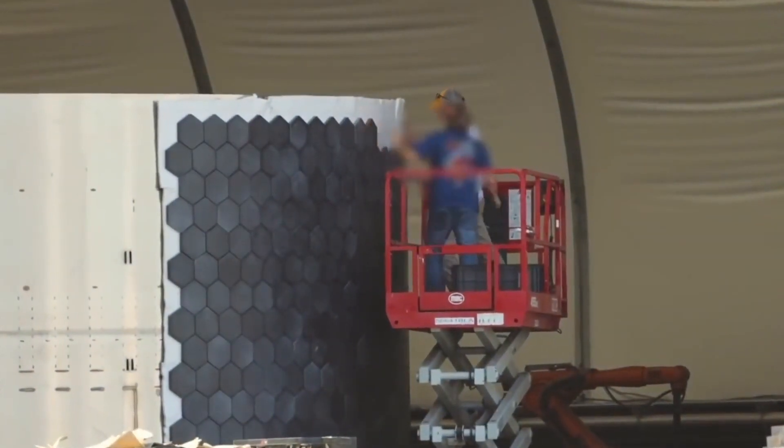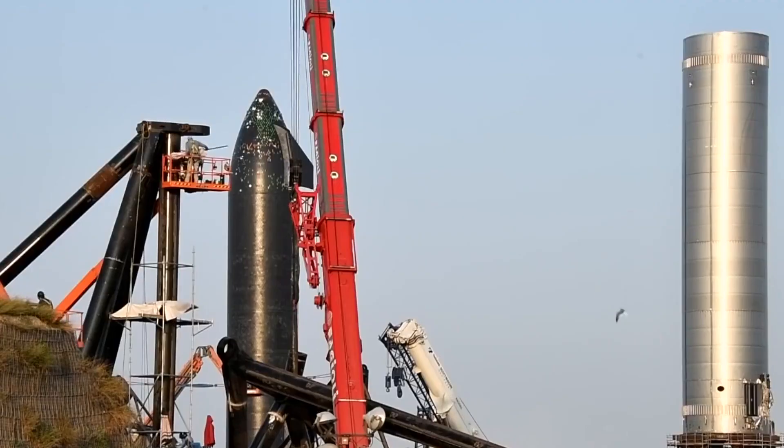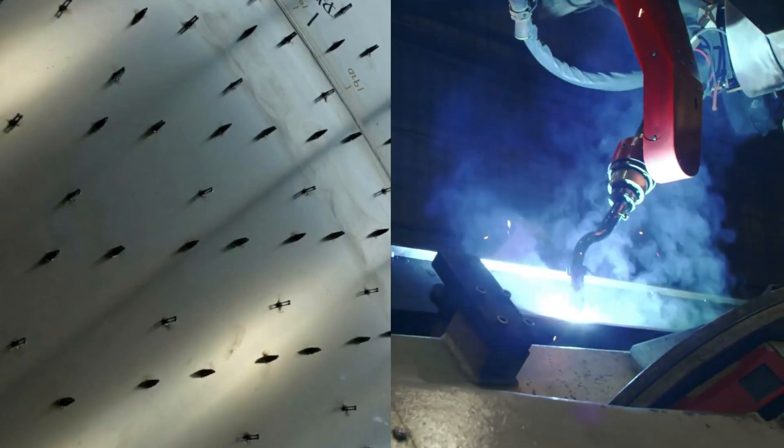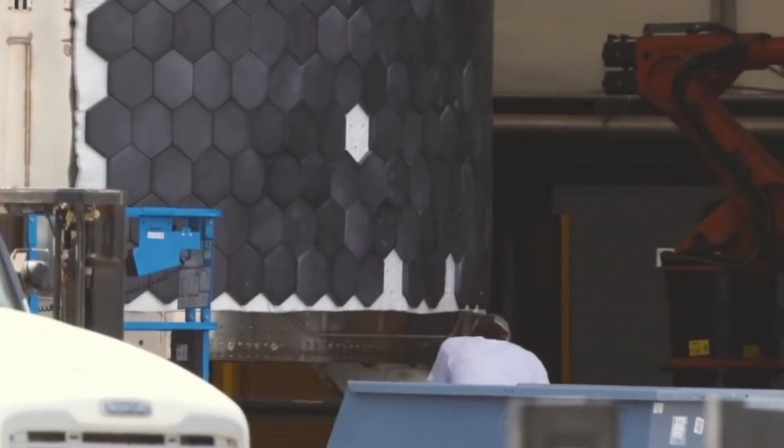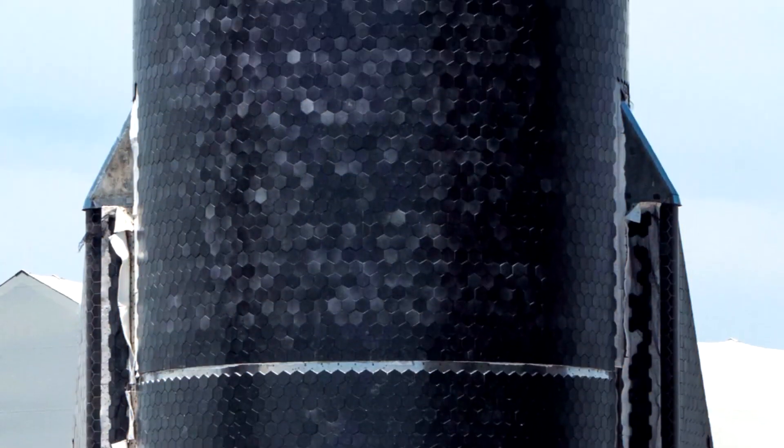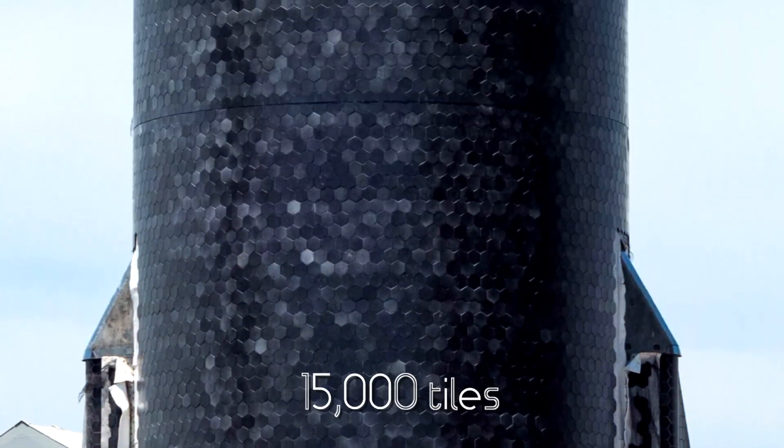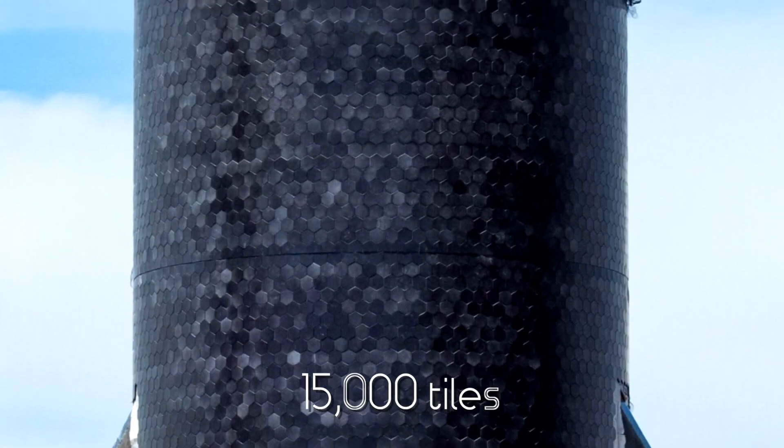As of right now, Starship's tiles are fitted and inspected manually, but it's far more efficient than the Space Shuttle gluing method. They're using red robots to weld mounting pins into the stainless steel, and then a person just comes along and gives it a nice push into place.